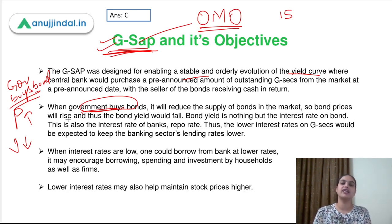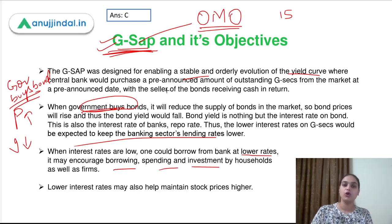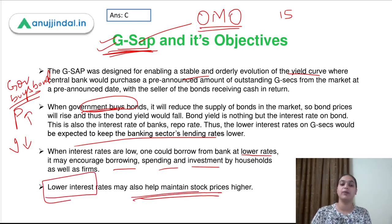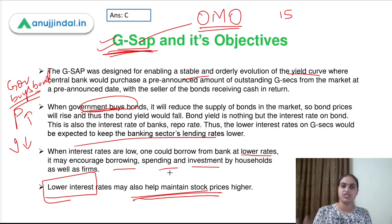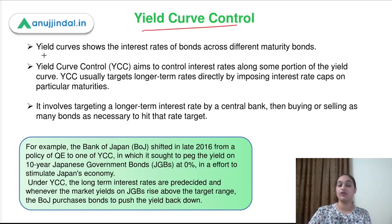When interest rates fall, borrowing becomes cheaper. Banks borrow at lower rates, borrow more, spend more, and invest more, thereby stimulating the economy. Lower interest rates also help maintain higher stock prices. The GSAP's overall idea was to stabilize bond yields, reduce borrowing costs, encourage spending and investment, and support equity markets — all in the context of the pandemic-affected economy.